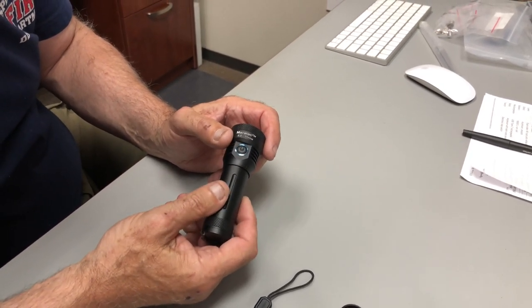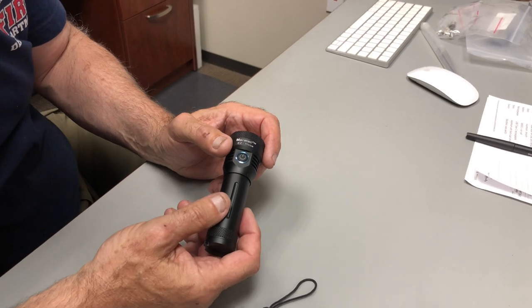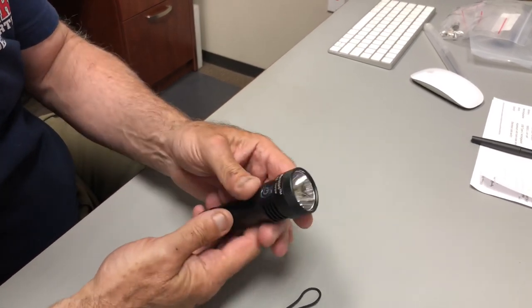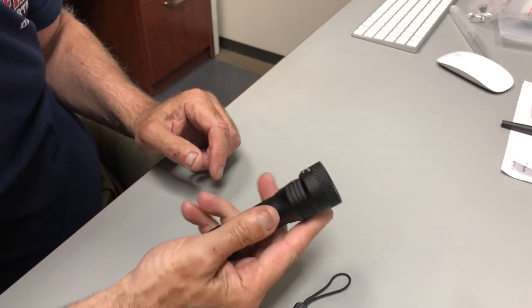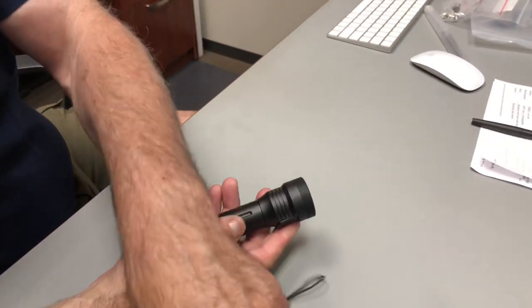And, again, it takes an 18650 or a 21700. And this is the EZ Throw. It has anti-reflective coating front and back. So it's a simple light. Put the lanyard on it if you want.